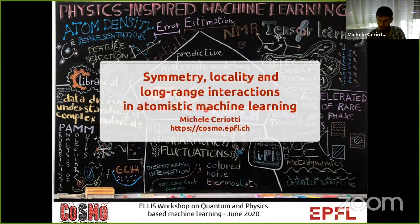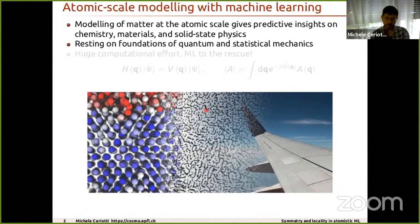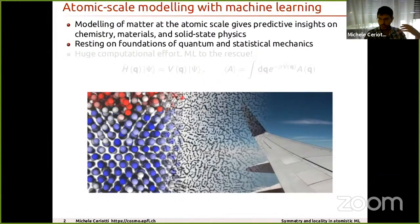Many of you have seen Gabor Csányi's talk earlier during this conference. He gave a fantastic introduction to why we want to incorporate machine learning into atomic-scale modeling of materials and molecules. I'll give a very brief recap for those who didn't attend. My problem is the modeling of matter at the atomic scale, which provides a way to understand macroscopic behavior of materials — how the properties of a material contribute to device performance or the mechanical integrity of a wing.